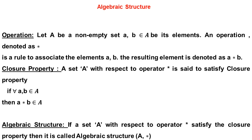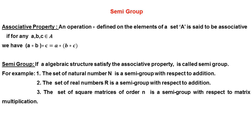Let us check whether the set of natural numbers under addition is an algebraic structure or not. Let's take an example: if a = 2 and b = 3, the given operation is addition. Then 2 + 3 = 5, which also belongs to the set of natural numbers. Therefore, the set of natural numbers N is an algebraic structure for the given operator addition.